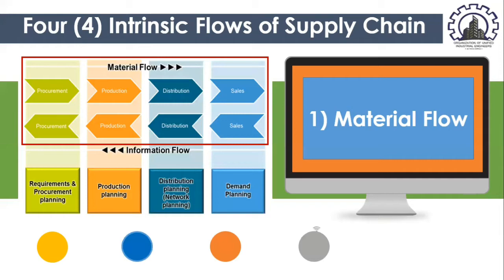In the material flow diagram, flow moves from left to right: from procurement, you purchase raw materials, which are delivered to production. The production area transforms raw materials into finished goods. Once finished, goods are brought to distribution centers, and from there made available for sale to end users. That's how material flow works in a supply chain.